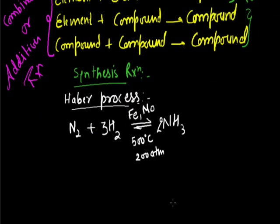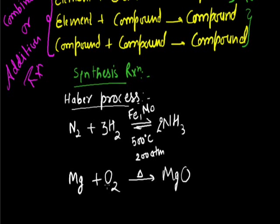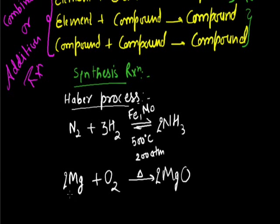Another example of synthesis reaction: magnesium burns in the presence of oxygen and forms magnesium oxide. We write 2 in front of MgO and 2 in front of Mg — the reaction is balanced. Magnesium is an element and oxygen is also an element, and they form magnesium oxide which is a compound. So element plus element forms compound — this is a synthesis reaction.